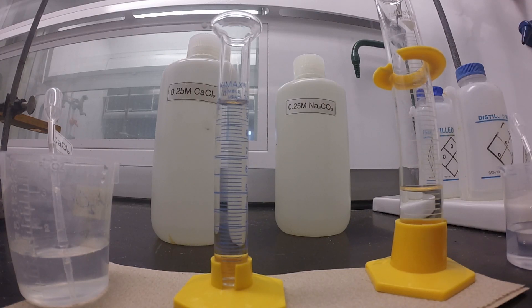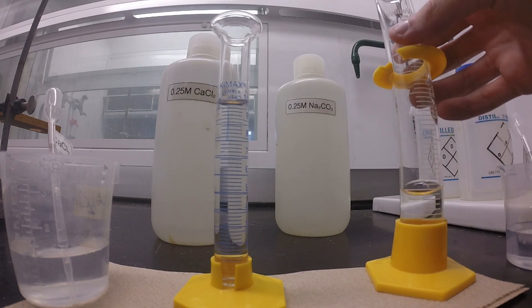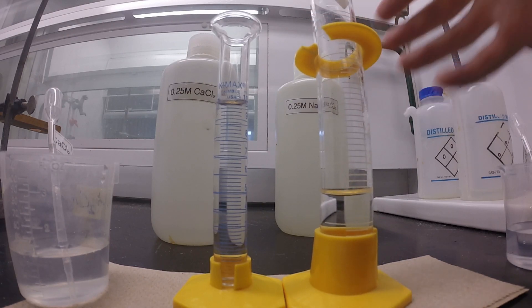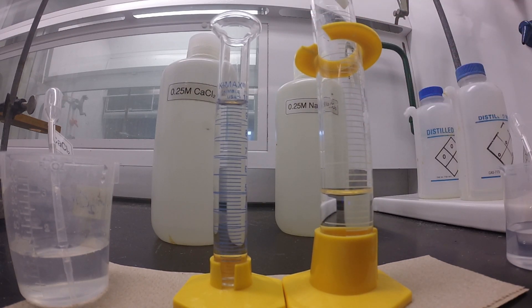So now we have both of our reactants ready: the 10 mL of the calcium chloride and the 15 mL of the sodium carbonate. Now that those two are measured out, we're going to go take care of the filter paper.